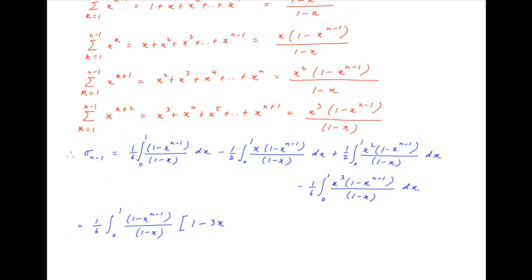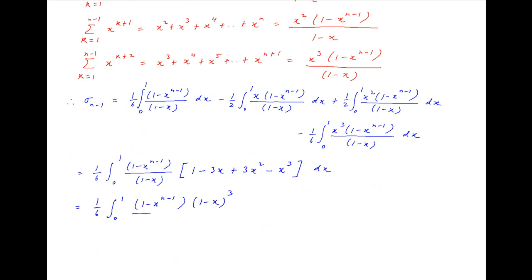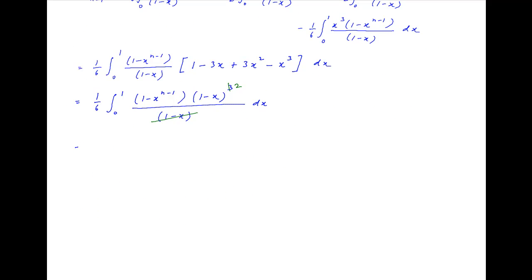Taking (1 − x^(n−1))/(1 − x) common, the bracket becomes 1 − 3x + 3x² − x³, which equals (1−x)³. So σ(n−1) = (1/6)·∫₀¹ (1 − x^(n−1))·(1−x)³/(1−x) dx, which simplifies to (1/6)·∫₀¹ (1 − x^(n−1))·(1−x)² dx.